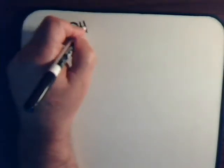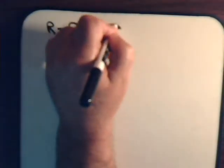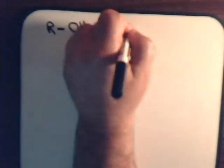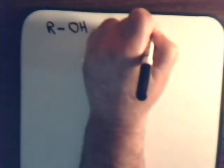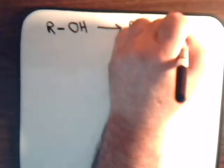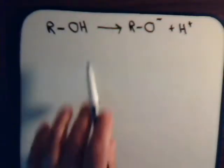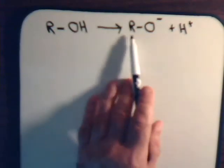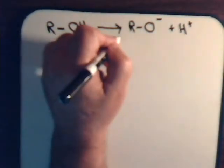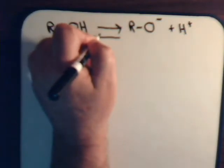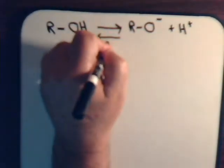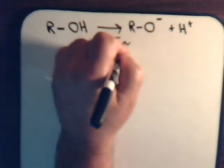Suppose we have just a generic alcohol. It is possible to form the alkoxide ion — it loses a proton — and there's some solvation energy for this, but alcohols certainly are not acidic. In fact, the pKa for alcohols is around 16.